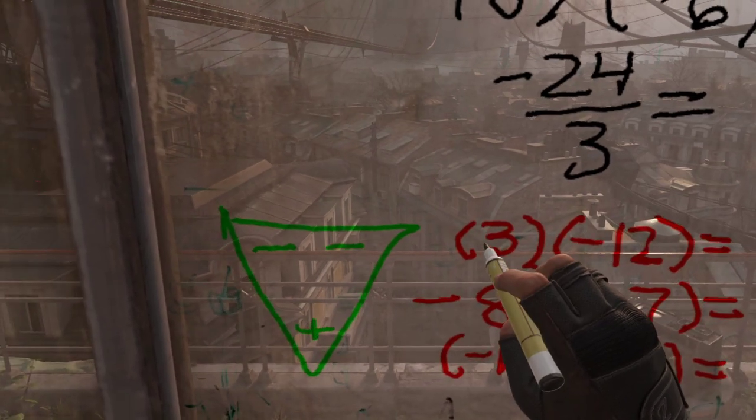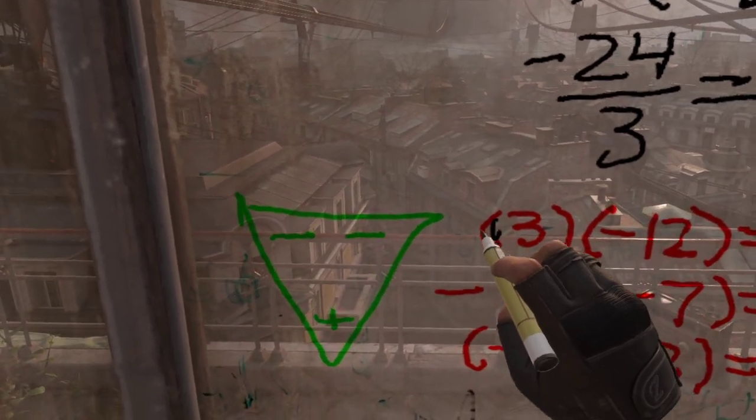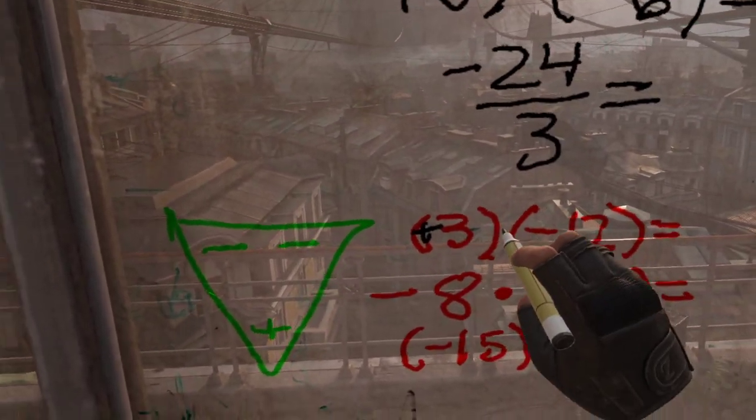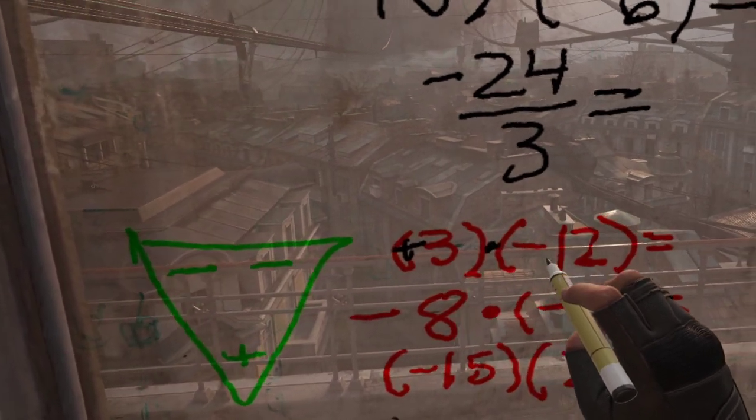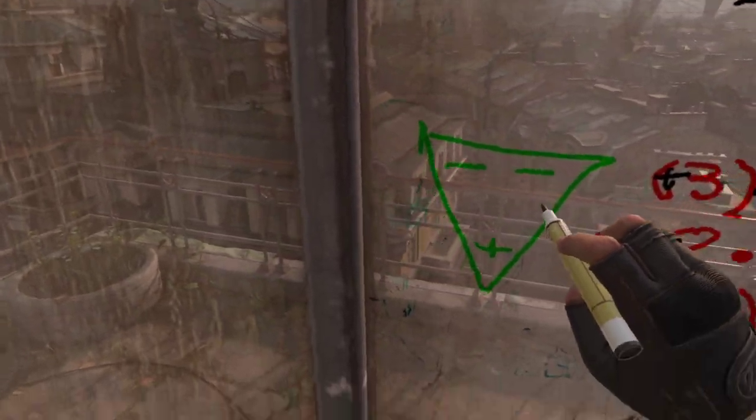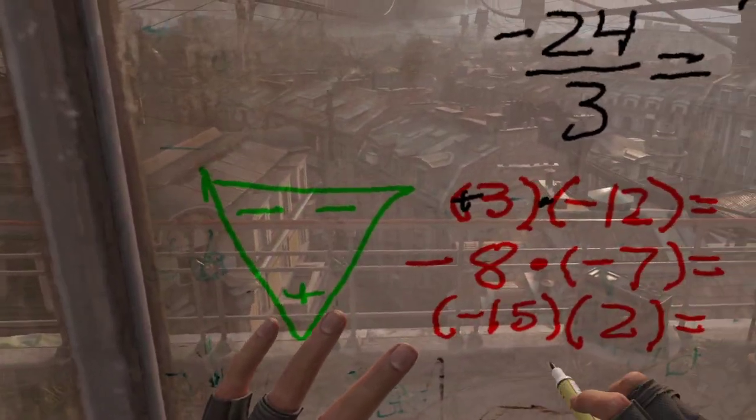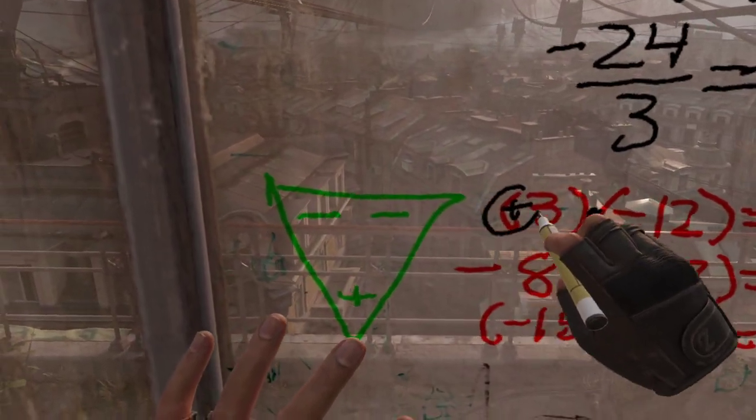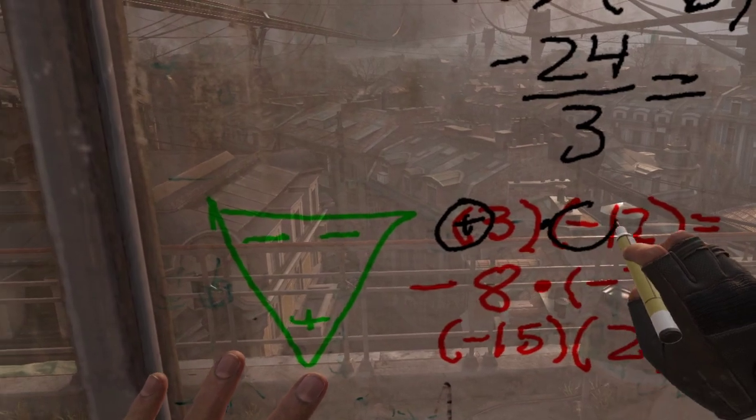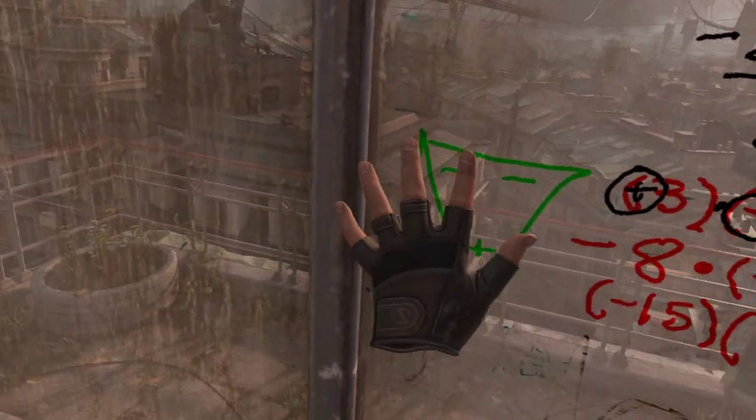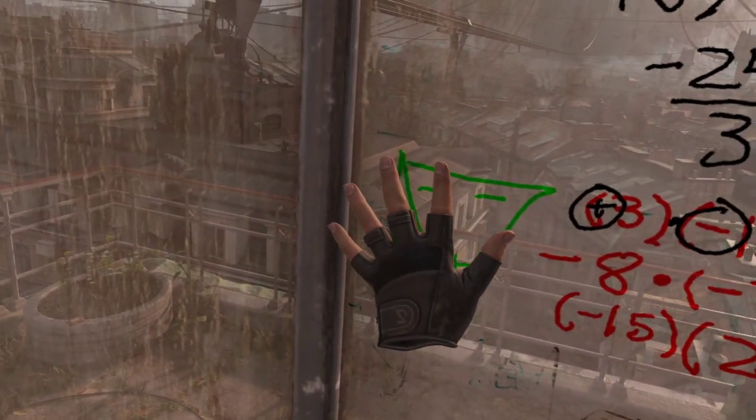So this first problem says positive 3 times—remember this means multiplication—negative 12. So if I look at the Doritoman over here, to cover up the positive symbol and the negative symbol like this, okay, so I cover that up.